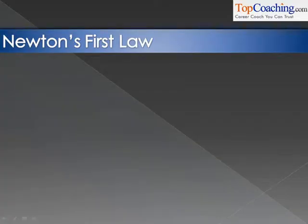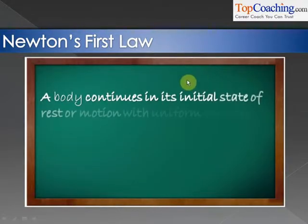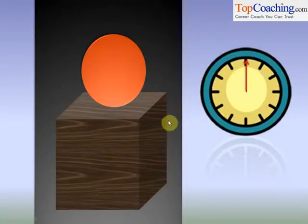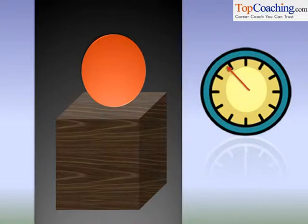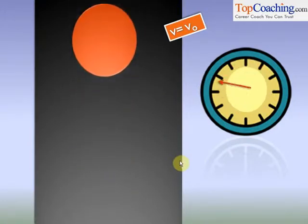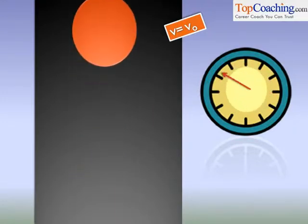Let's start off with Newton's First Law of Motion. Newton's First Law states that a body continues in its initial state of rest or motion with uniform velocity unless an external unbalanced force acts on it. The First Law of Motion is quite simple. It means that if there's a body that's at rest, then it will continue being at rest, no matter how much time passes, unless a force acts on it — unless some external force tries to move this body. So you can see this ball is at rest as time passes on and on. Similarly, if a body is moving with constant velocity v equal to v naught, then the body will continue moving with constant velocity v equal to v naught unless an external force acts on it — unless an external force reduces its velocity or increases its velocity. That's Newton's First Law.